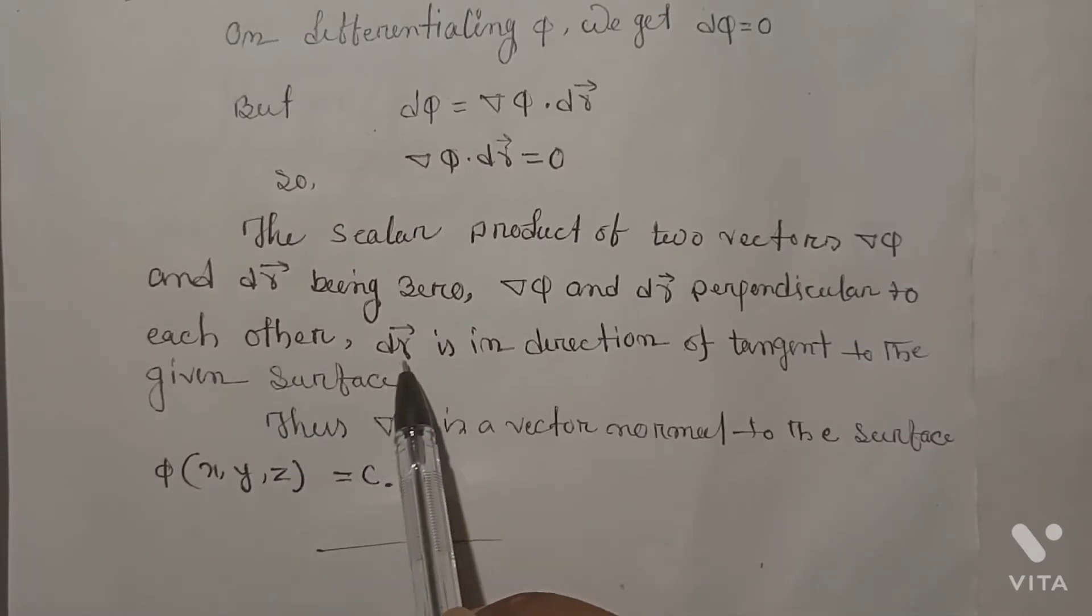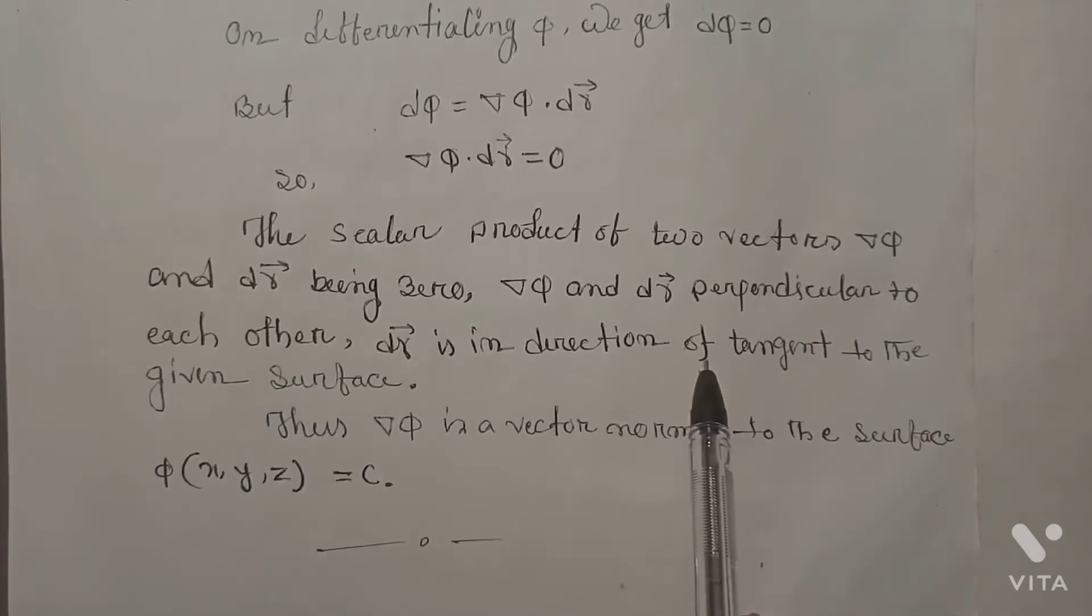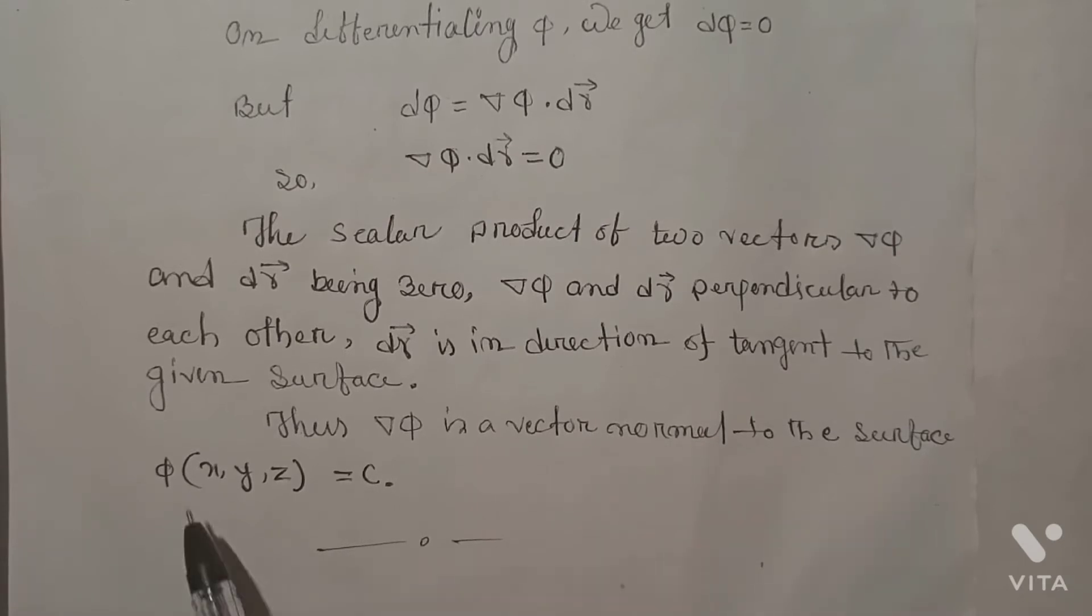dr is in the direction of tangent to the given surface. Thus ∇φ is a vector normal to the surface φ(x, y, z) = c.